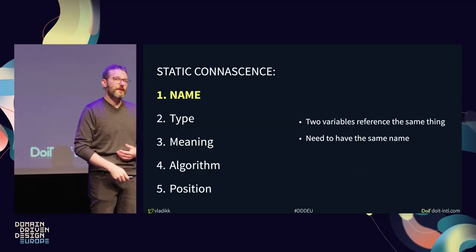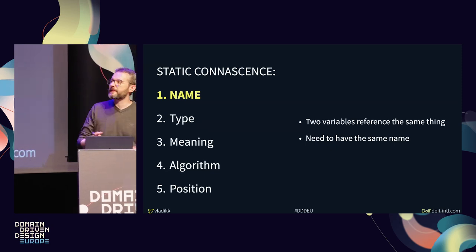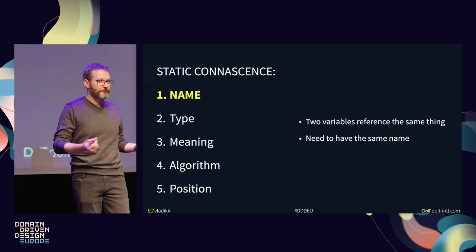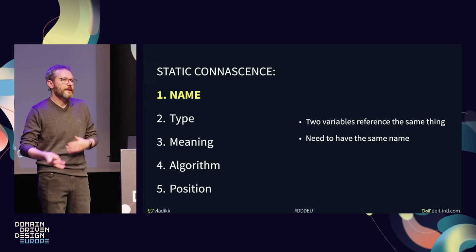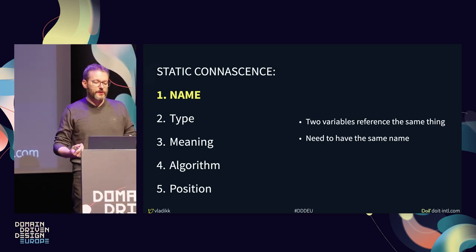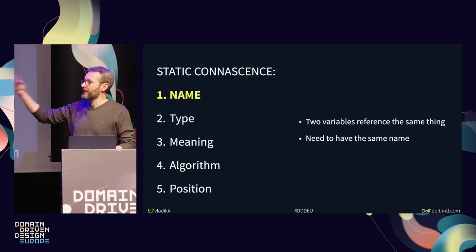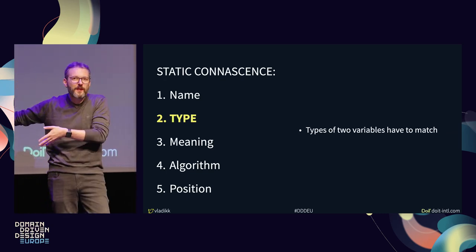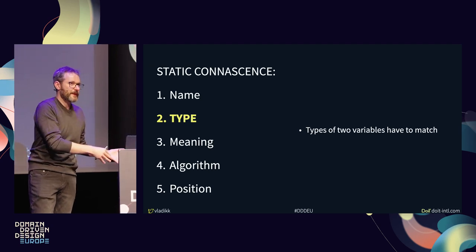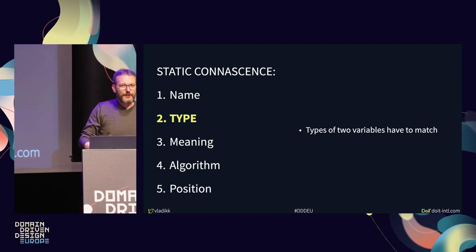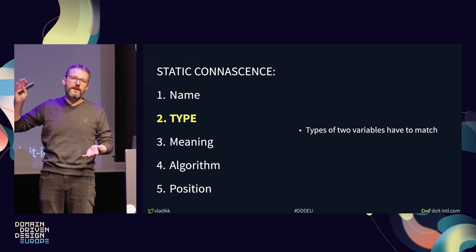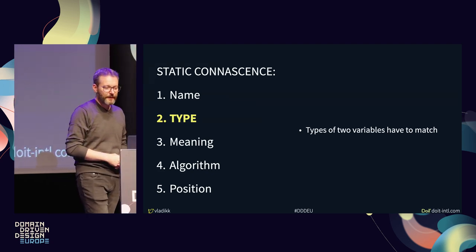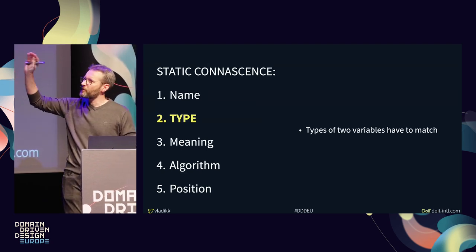Starting with static connascence: the lowest level is connascence of name — to use a variable, you need to know its name. Next is connascence of type — you also need to know the type. These two usually come together and are often treated as one unit. Connascence of meaning happens when conventions assign meanings to values — for example, 'status equals seven.' If two components communicate by passing that value, both must know what seven means, duplicating that knowledge.